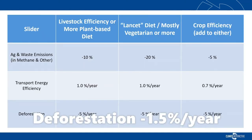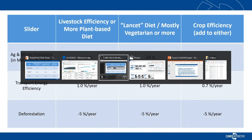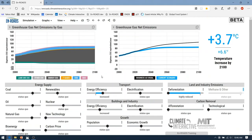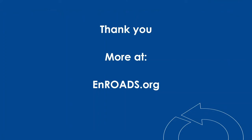To review, a table with these slider settings will be with the facilitation materials at EnROADS.org. When facilitating EnROADS, be sure to note that changes to the food system can be part of the climate solution, not the whole solution, and have important additional benefits. Good luck with your use of EnROADS, and sign up at EnROADS.org. Thank you.